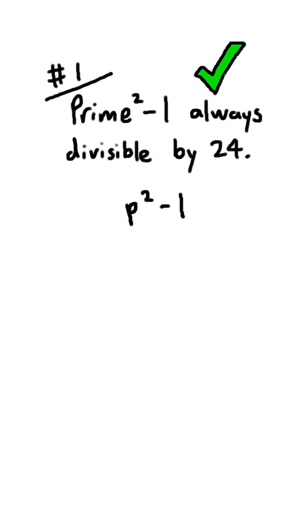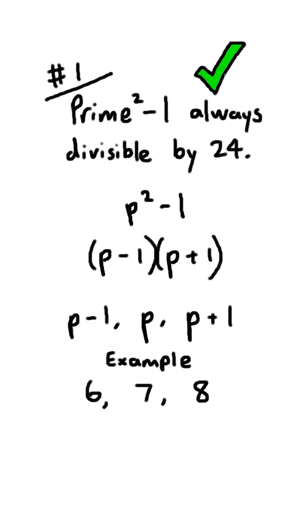This is because p squared minus 1 can be factored as p minus 1 times p plus 1. Since p minus 1, p, and p plus 1 are three consecutive numbers in a row, one of these has got to be divisible by 3.